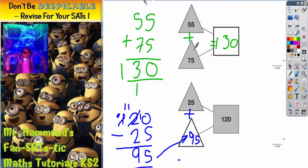So there you have it, there's the two answers, 130 in the square and 95 in the triangle.